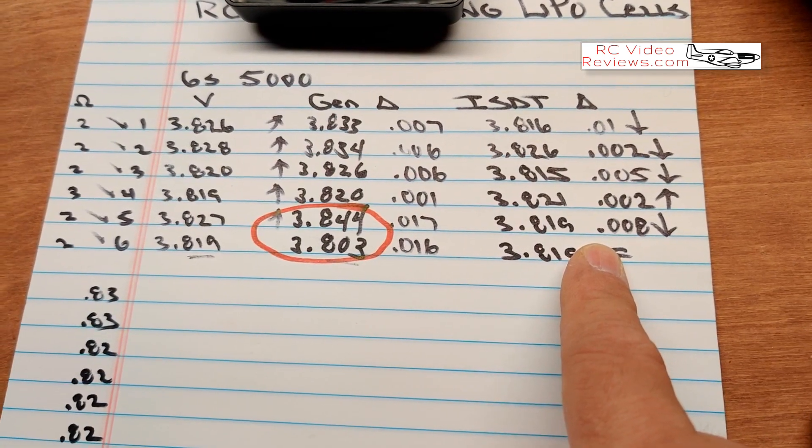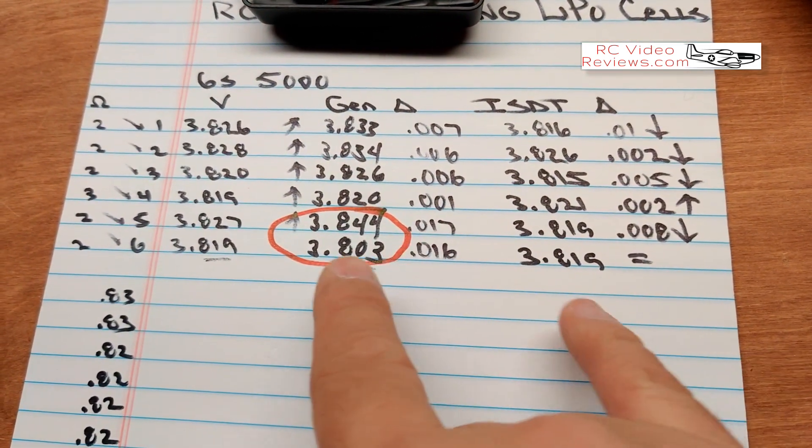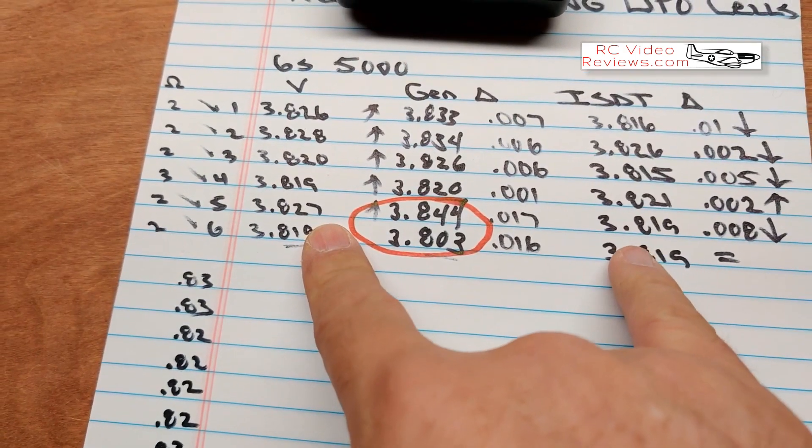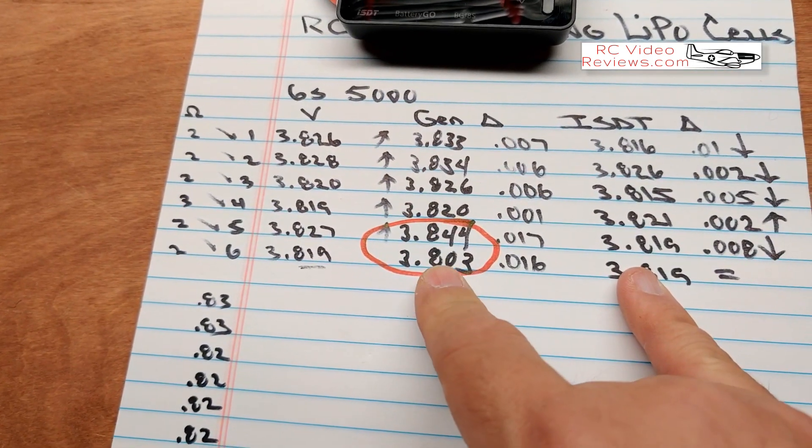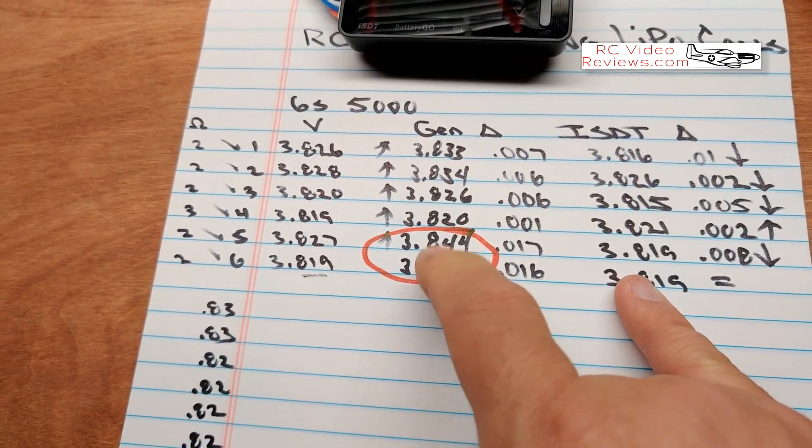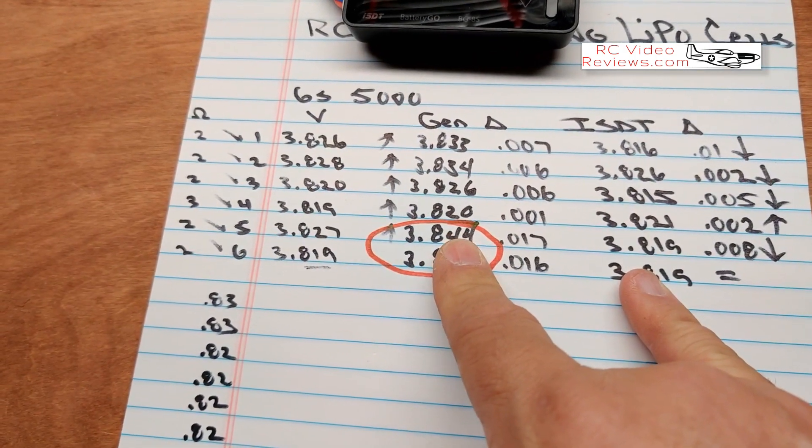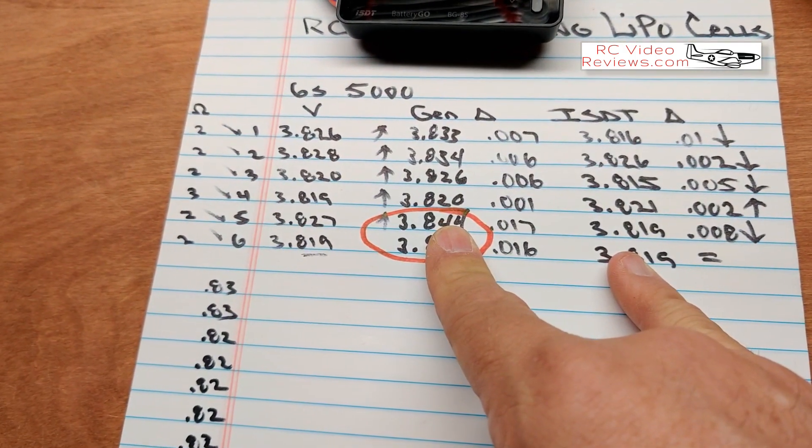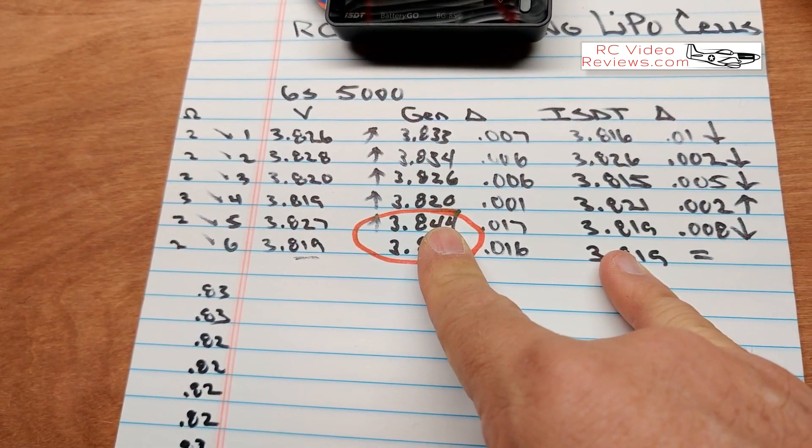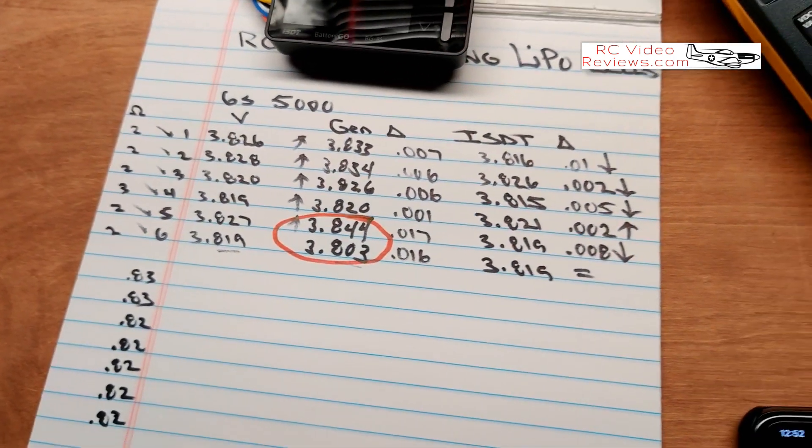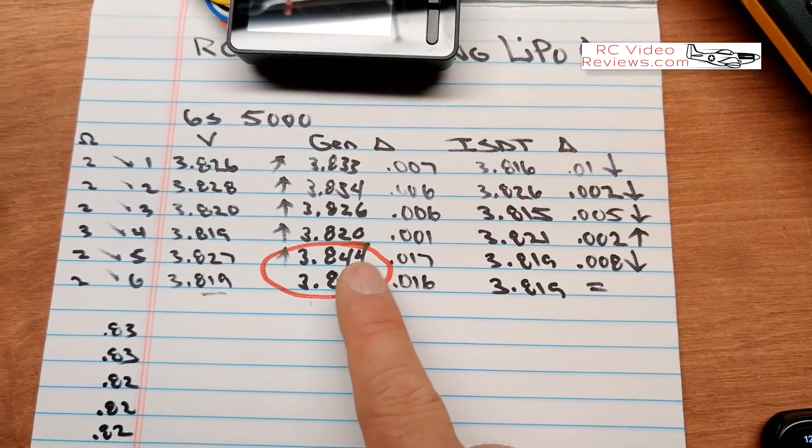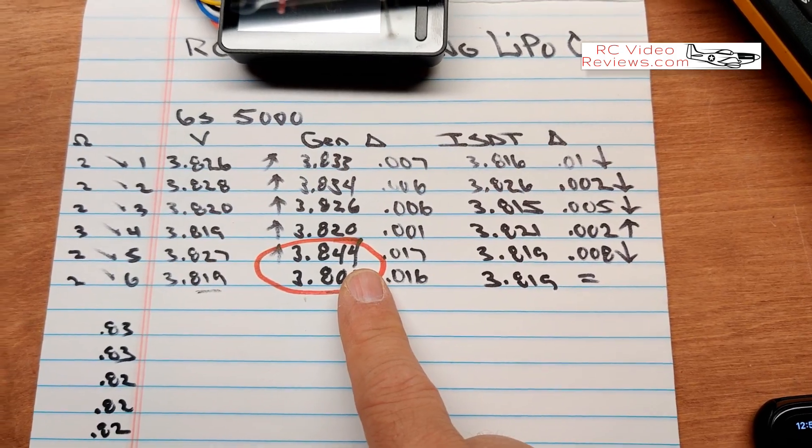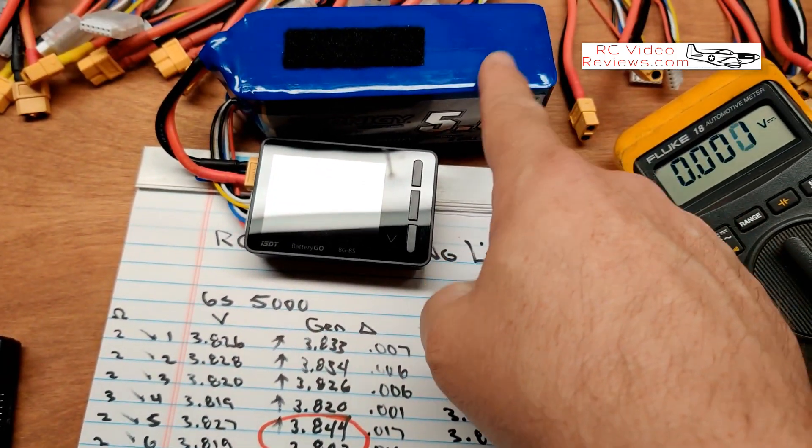Okay, 0.008 on cell number five against 0.017. But here's where the problem comes in, because if I were to look at this and I wanted to parallel charge, with this reading, 3.844 against 3.803, I wouldn't do it. I'd have to go balance, I would balance this out somehow. I would either use my balancing method or I'd run a discharge cycle and cycle it, or I would trust what was going on on the iCharger. But the point is that this tool, that's what I use to determine what has to happen next.